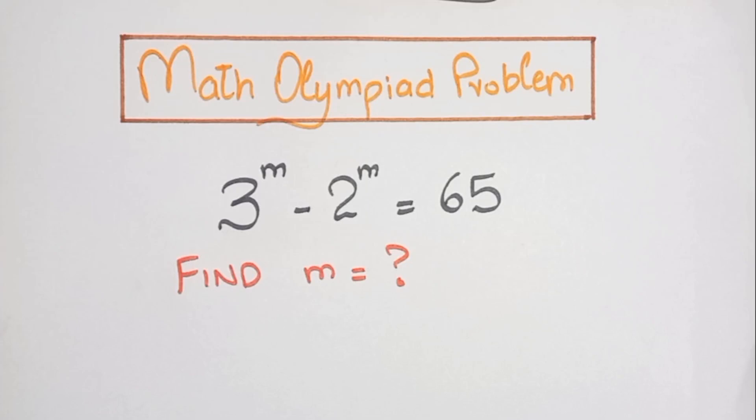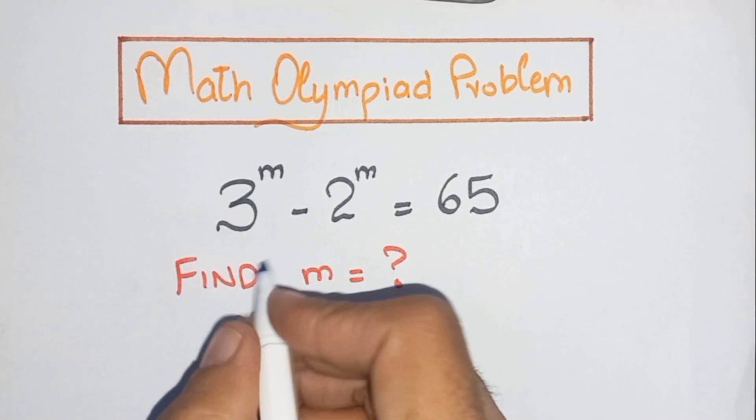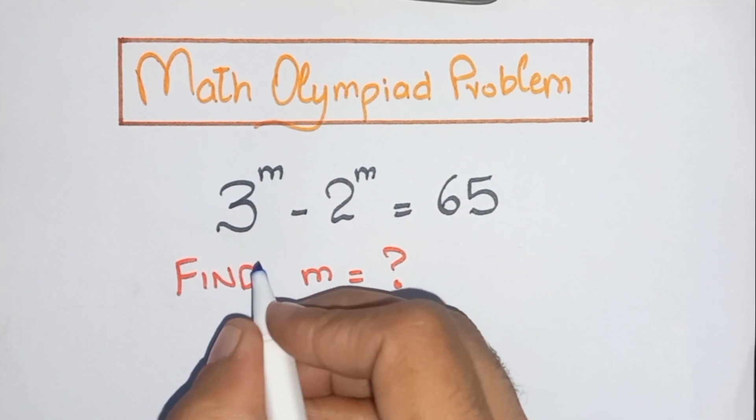Today I'm solving the Math Olympiad problem to find the value of m. The given equation is 3^m - 2^m = 65. So let's solve it.